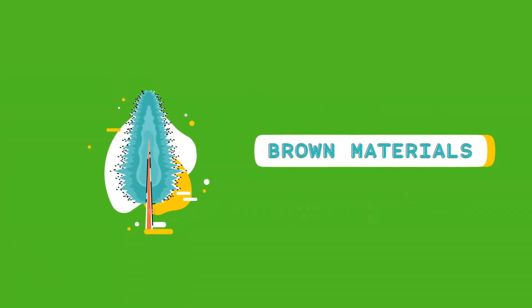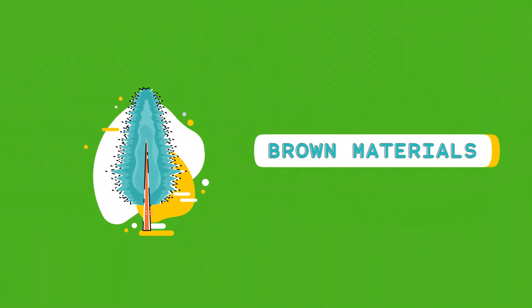Brown materials include dry leaves, twigs, cardboard, and sawdust. They provide carbon and structure to the compost pile.